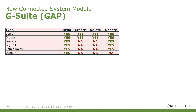As you can see on the screen, there are several types manageable right now. You can create users and groups. You can as well delete and update them if necessary. And you can deal with owners, org units, admin roles, and domains.